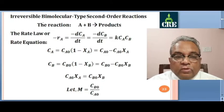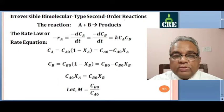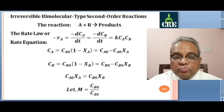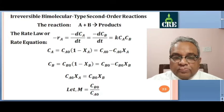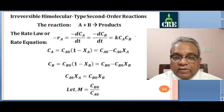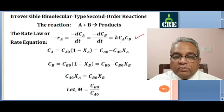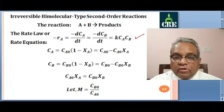Now we will see the irreversible bimolecular type second order reaction. Initially we are considering all irreversible reactions. Here A plus B gives products — bimolecular and second order — because we are assuming it is first order with respect to A and first order with respect to B. The stoichiometric coefficient is the same as the order, meaning we consider this an elementary reaction. So minus RA equals minus dCA by dt equals minus dCB by dt equals k times CA times CB. Here the order is CA raised to 1, CB raised to 1, overall order is 2.